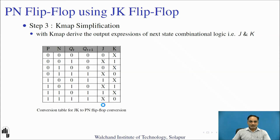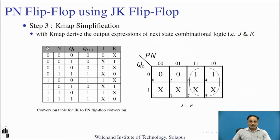First we will derive the expression for J. Inputs P and N are used to address the columns, while present state addresses the rows. Mapping the J column onto the KMAP gives values: 0x, 0x, 0x, 0x, 1x, 1x. After mapping, we find a group of four cells. Taking don't-care cases into consideration to form a group, the expression for this group is simply P. So the expression derived is J = P.